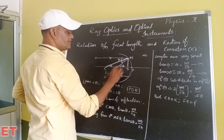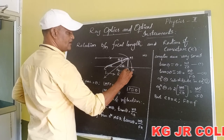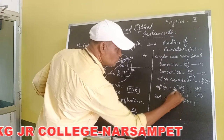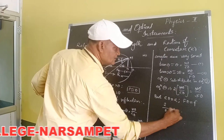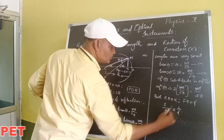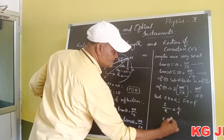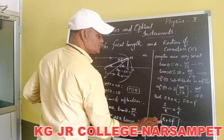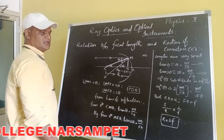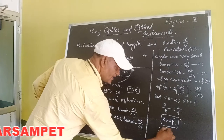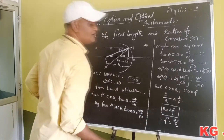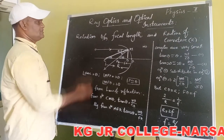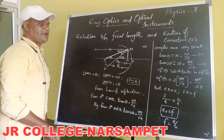Substituting these values into the expression: 2 divided by r equals 1 divided by f. Doing cross multiplication, we get r equals 2f. Therefore, the radius of curvature equals 2 times the focal length. Similarly, f equals r by 2, meaning the focal length is always equal to half of the radius of curvature. This is the relation between focal length and radius of curvature.